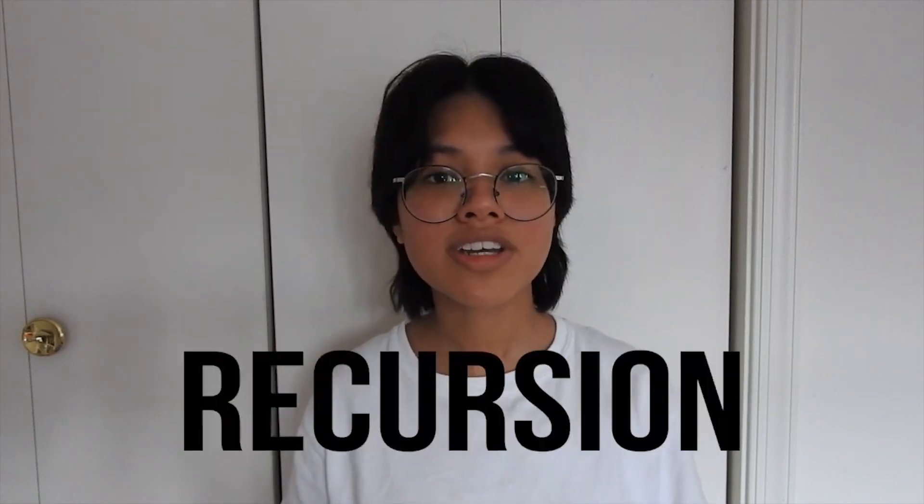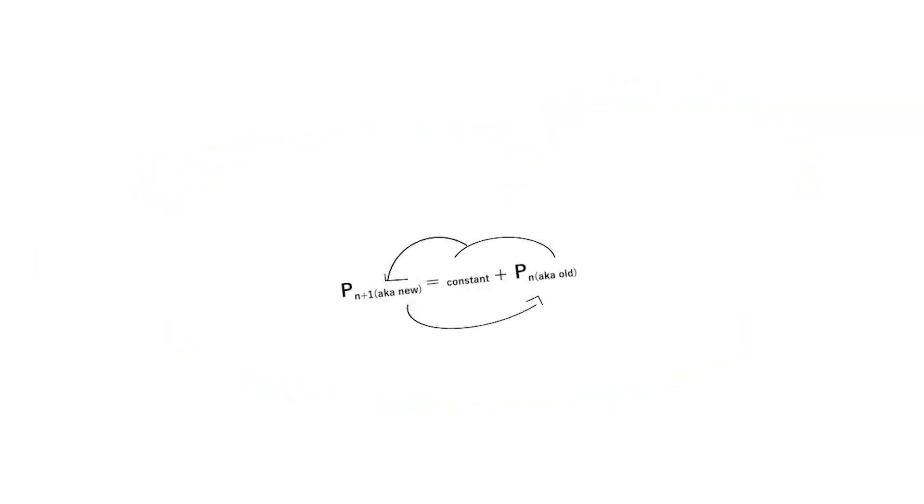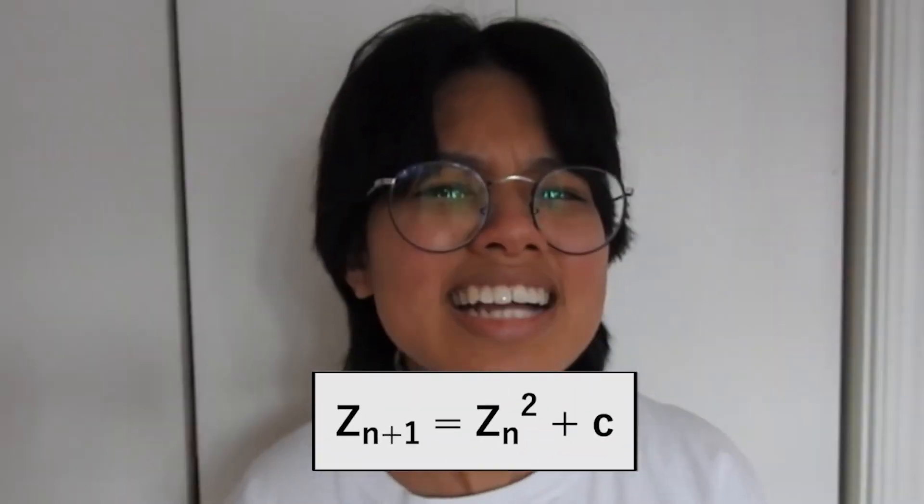They derive from mathematical equations as an ongoing feedback loop or recursion, where the pattern takes the input and returns the output which becomes the next input, and so on. Here's the equation to make this Mandelbrot set. Yeah, it's that simple. So c is a complex number.